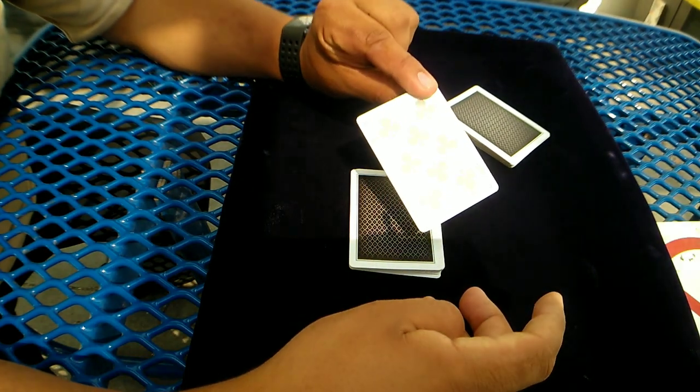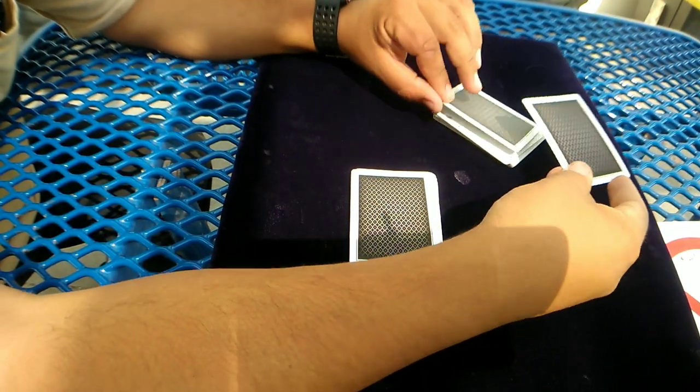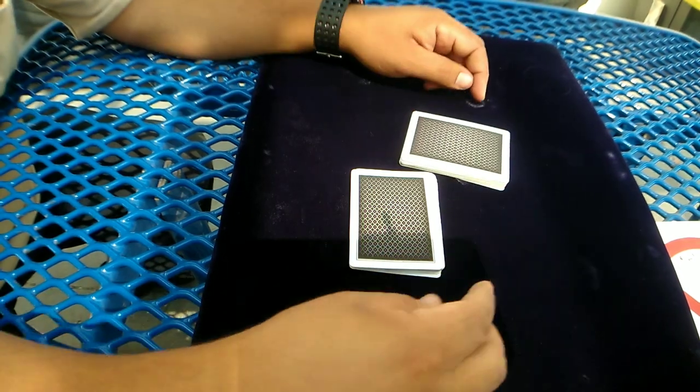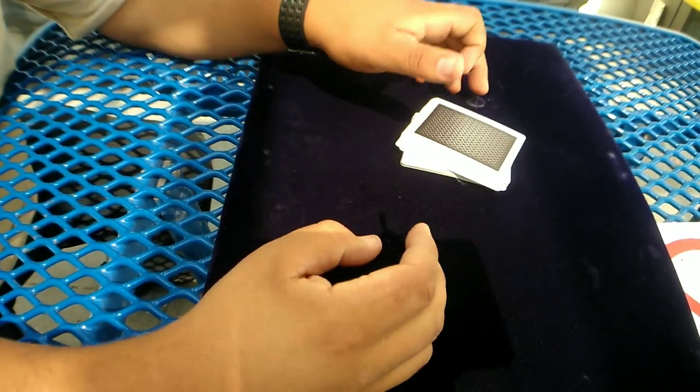Have them place it on top of this half. See? Two aces and two cards. Complete the cut as such.